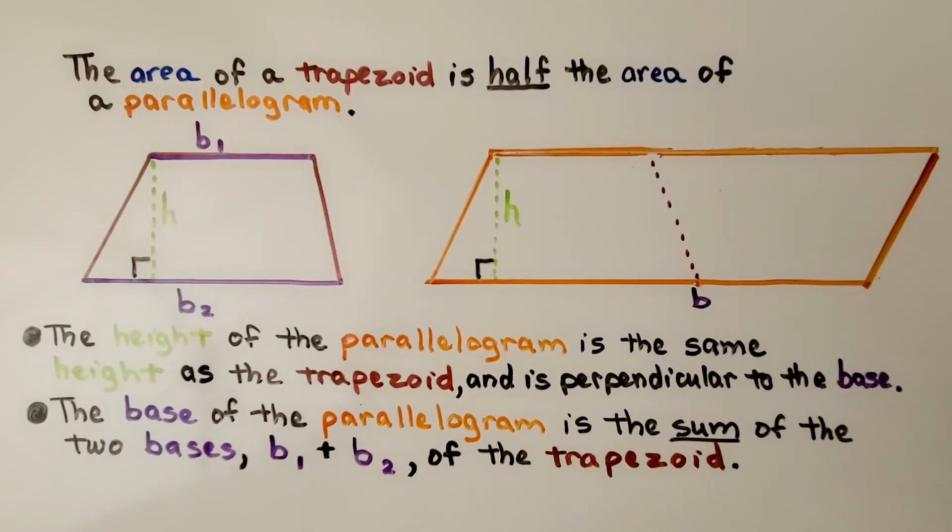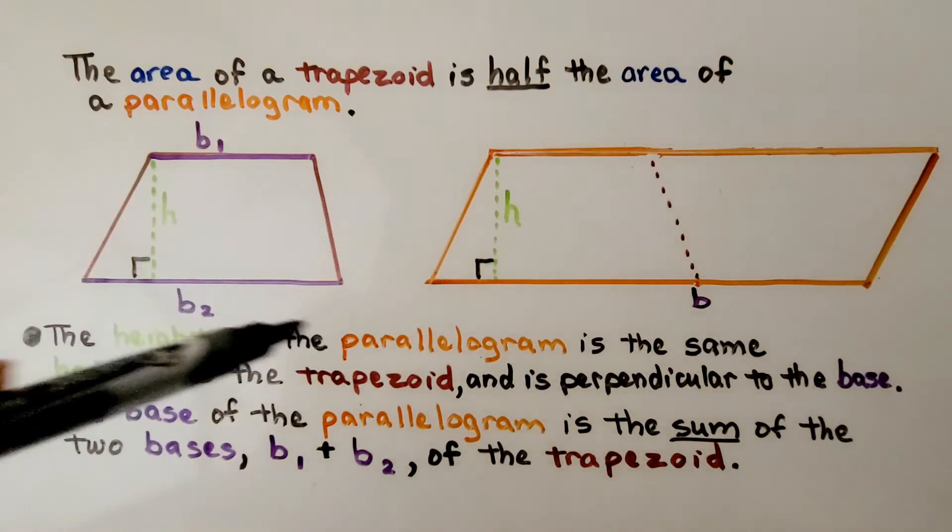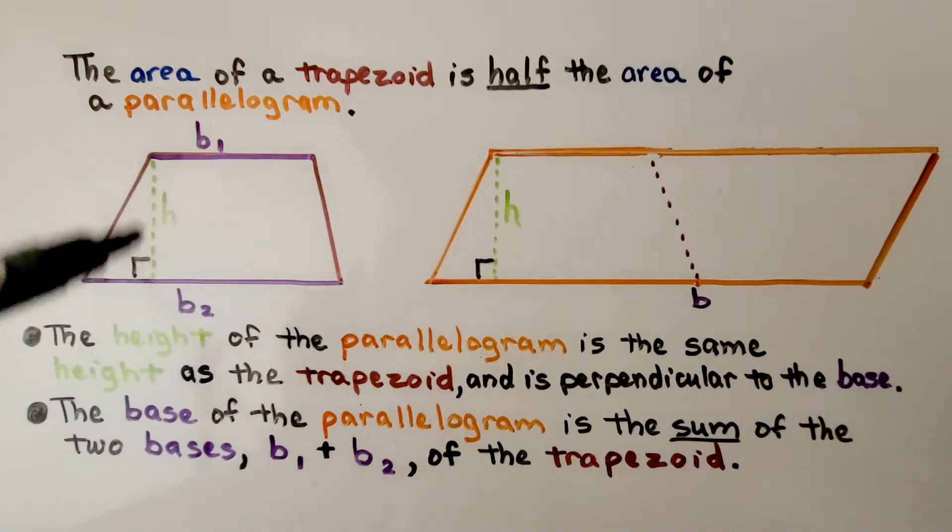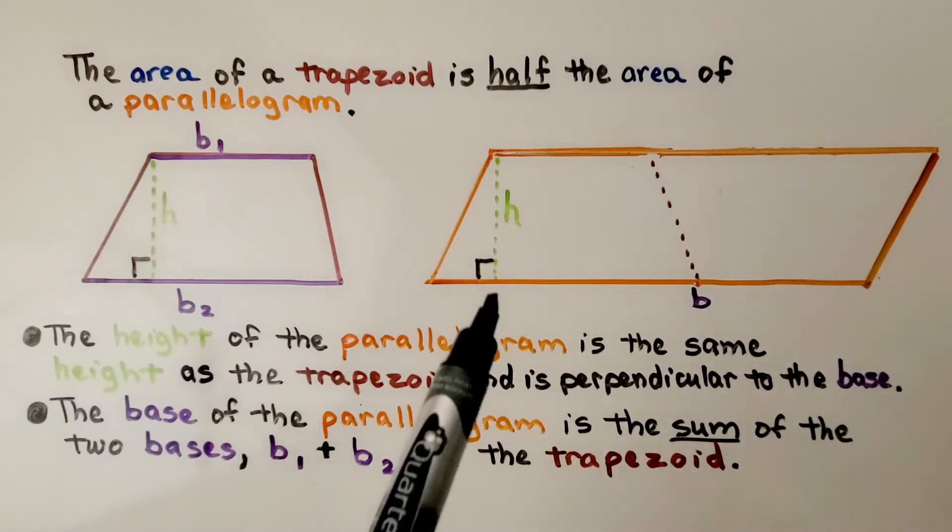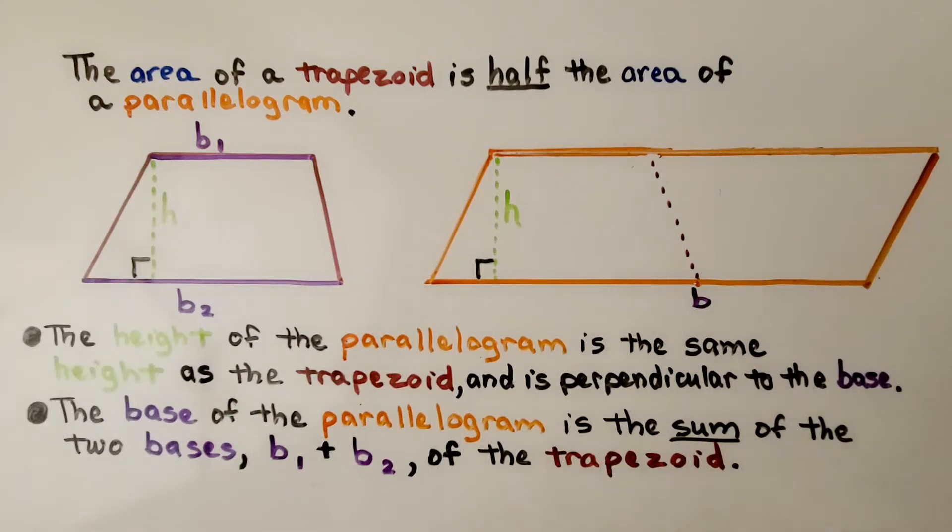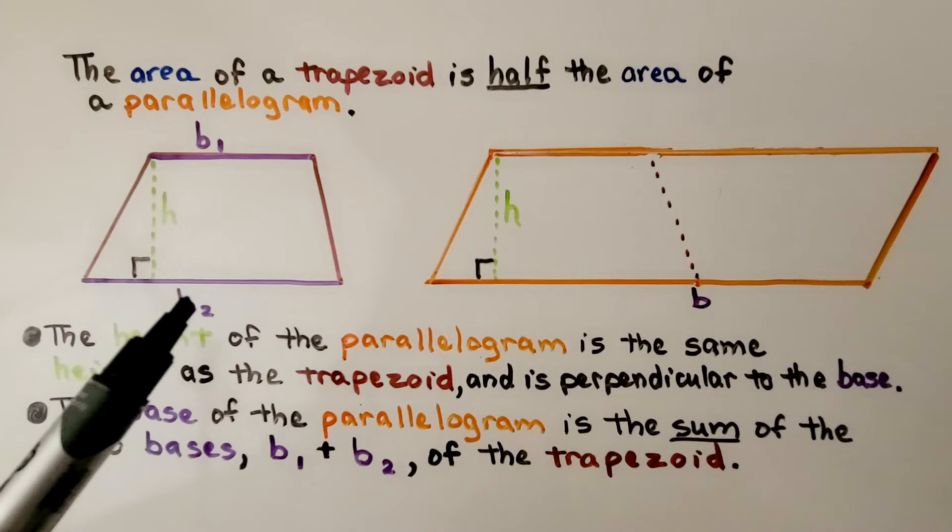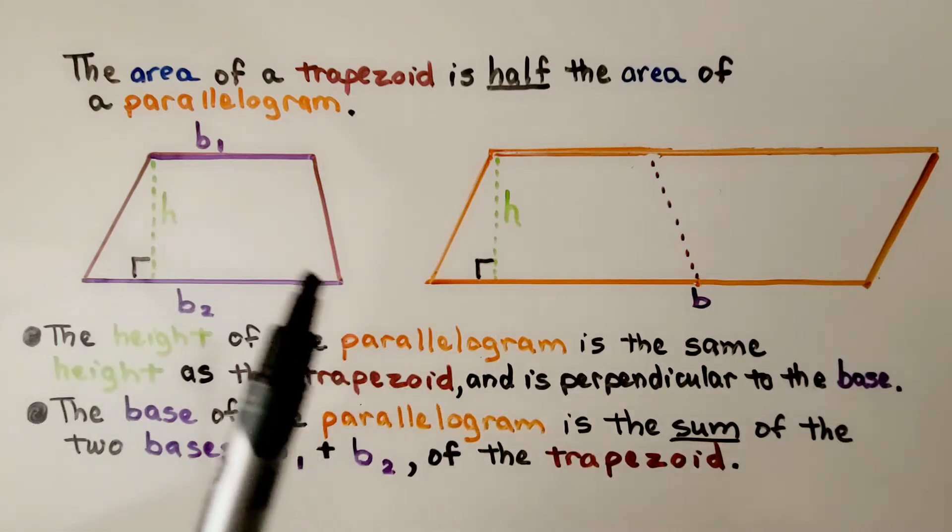The area of a trapezoid is half the area of a parallelogram. The height of the parallelogram is the same height as the trapezoid and is perpendicular to the base. The base of the parallelogram is the sum of the two bases, base 1 plus base 2 of the trapezoid.